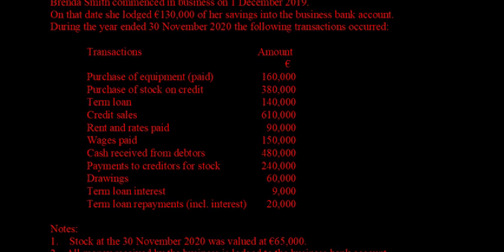Rent and rates paid £90,000. Wages paid £150,000. Cash received from customers (debtors) £480,000. Since it's the first year there's no opening balance, so working out what customers owe is straightforward: £610,000 sold minus £480,000 received. Payments to creditors for stock £240,000.